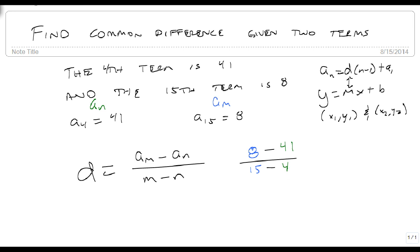Well now we just need to evaluate. 8 minus 41 is minus 33, and 15 minus 4 is 11. So minus 33 divided by 11 is minus 3, so my common difference is minus 3,